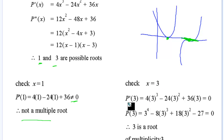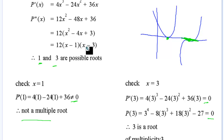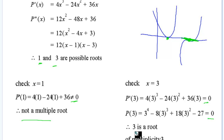We check x equals 3: the first derivative at x equals 3 gives zero, and the function at x equals 3 also gives zero. So x equals 3 is a root of multiplicity three. We then have (x minus 3)^3, and since (minus 3)^3 equals minus 27, the other bracket must be (x plus 1), so the other root is x equals minus 1.